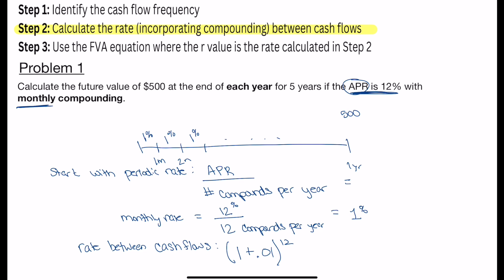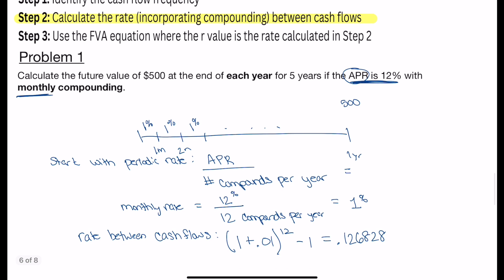Subtract off 1, and I end up with an annual rate of above 12% or 12.68% just about. So this rate that we just solved for, this is the rate including compounding.